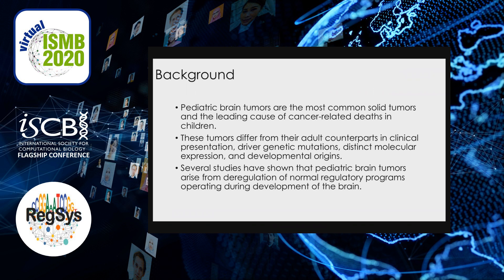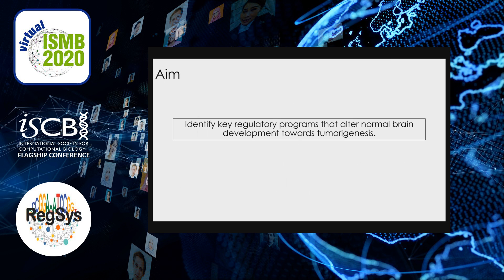Just a little bit of background about pediatric brain tumors. These are the leading cause of cancer-related deaths in children. They differ significantly from their adult counterparts in clinical manifestations, molecular features, as well as developmental origins. Several studies to date have shown that pediatric brain tumors arise from deregulation of normal regulatory programs operating during development of the brain. Our aim in this study is to identify key regulatory programs that alter normal brain development towards tumorigenesis.